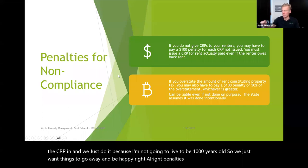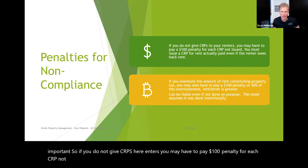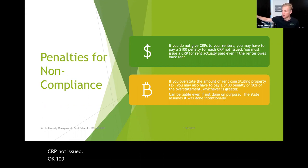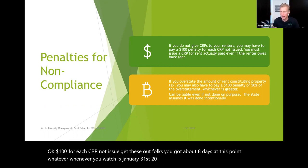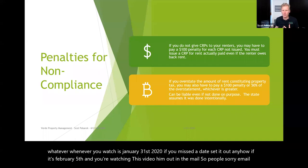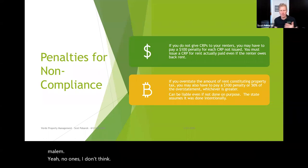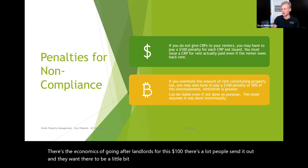Penalties for noncompliance: if you do not give CRPs to your renters, you may have to pay a $100 penalty for each CRP not issued. Get these out — January 31st, 2020. If you missed the date, send them out anyhow; even if it's February 5th, let's get them in the mail. I don't think the state is going to penalize you if you missed the date by five days but did get them out — they want people to send it and there just needs to be a little sting to make sure you're doing it.